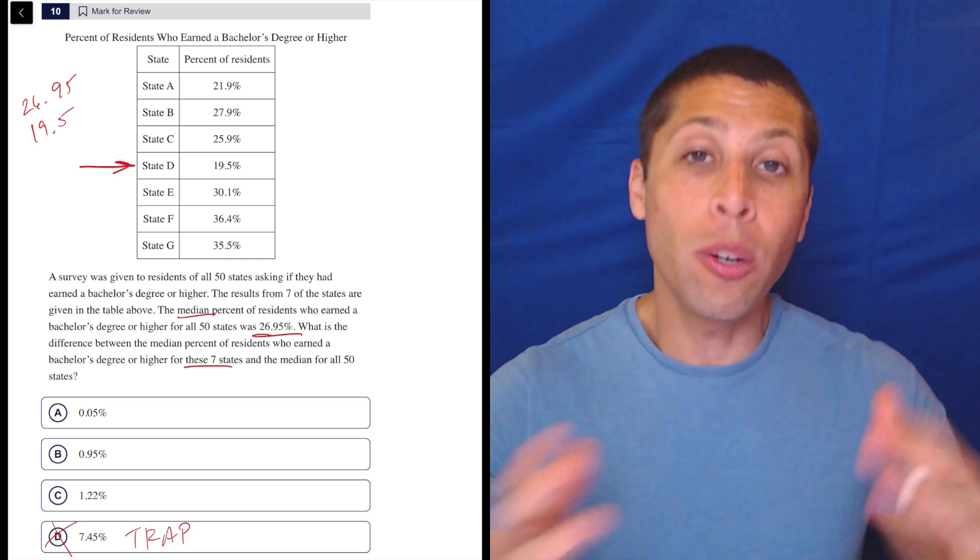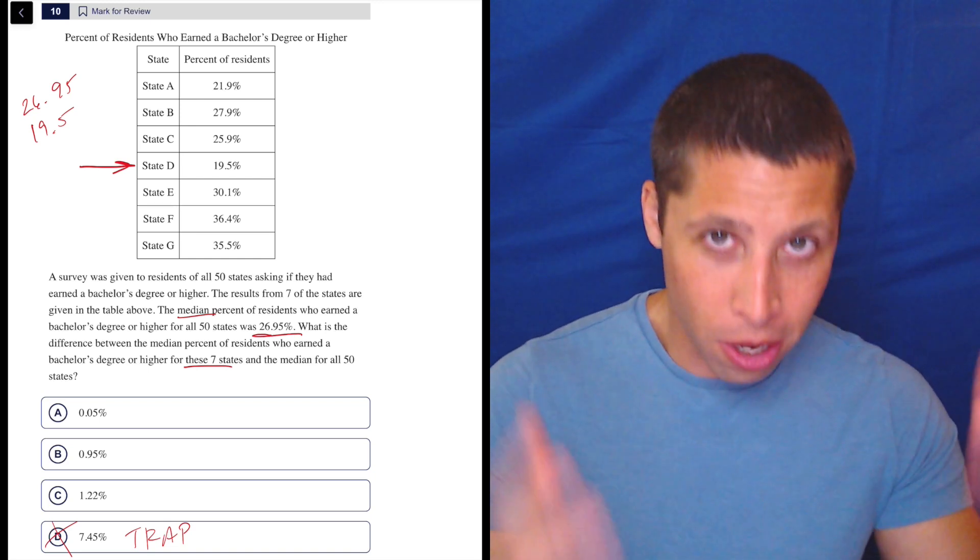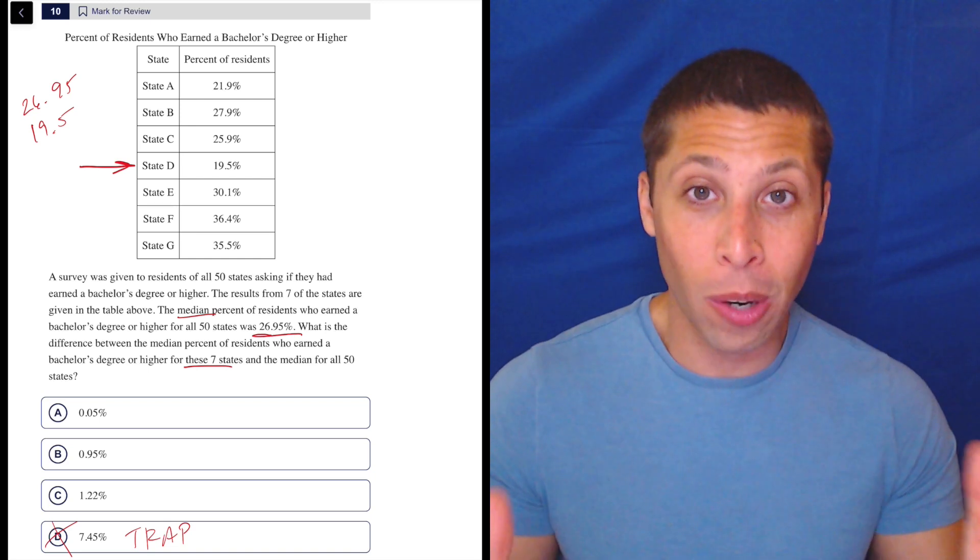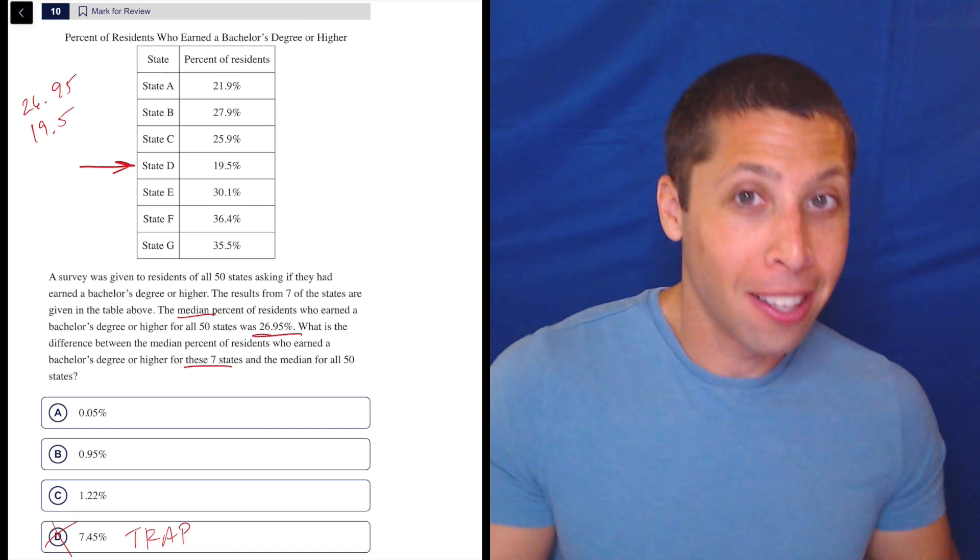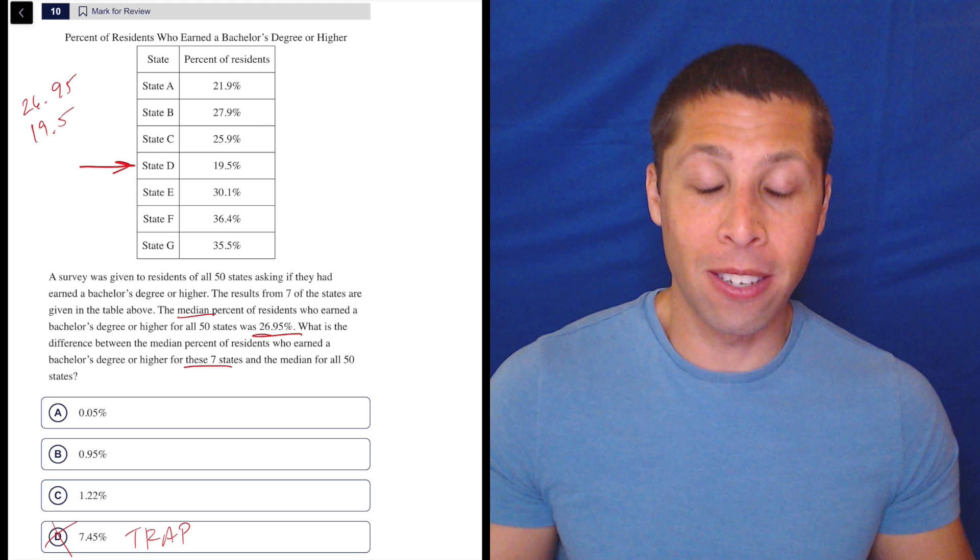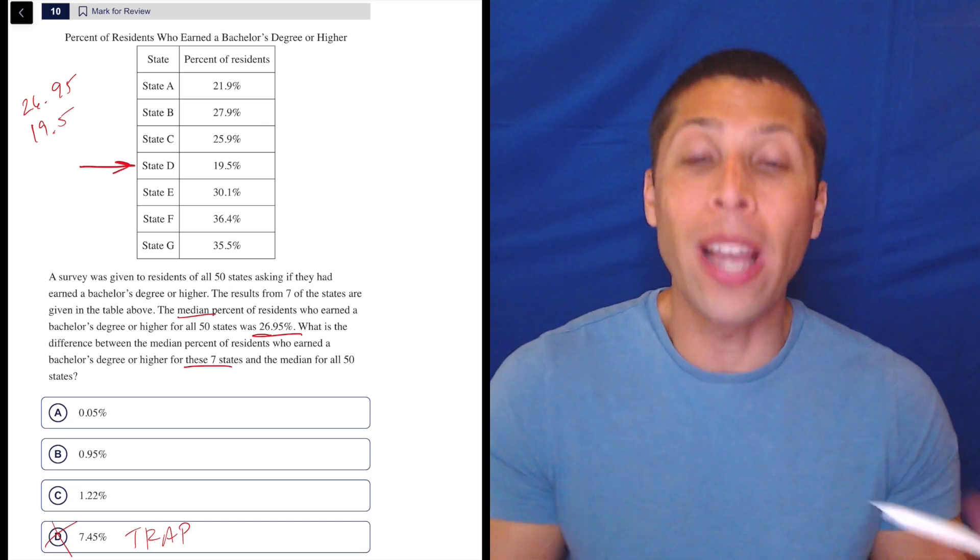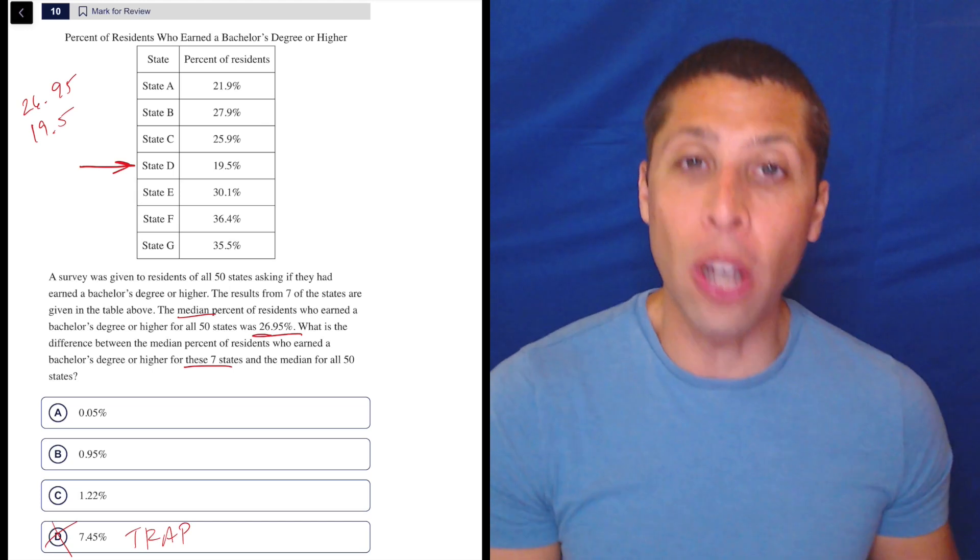First of all, again, knowing where you are in a section, you should know that this question is harder than that. Unless this is question like three, you really think the median is just going to be the middle row and the subtraction is the only math you're going to need to do? That's insane. That's way too little work for something that we know is a hard question.